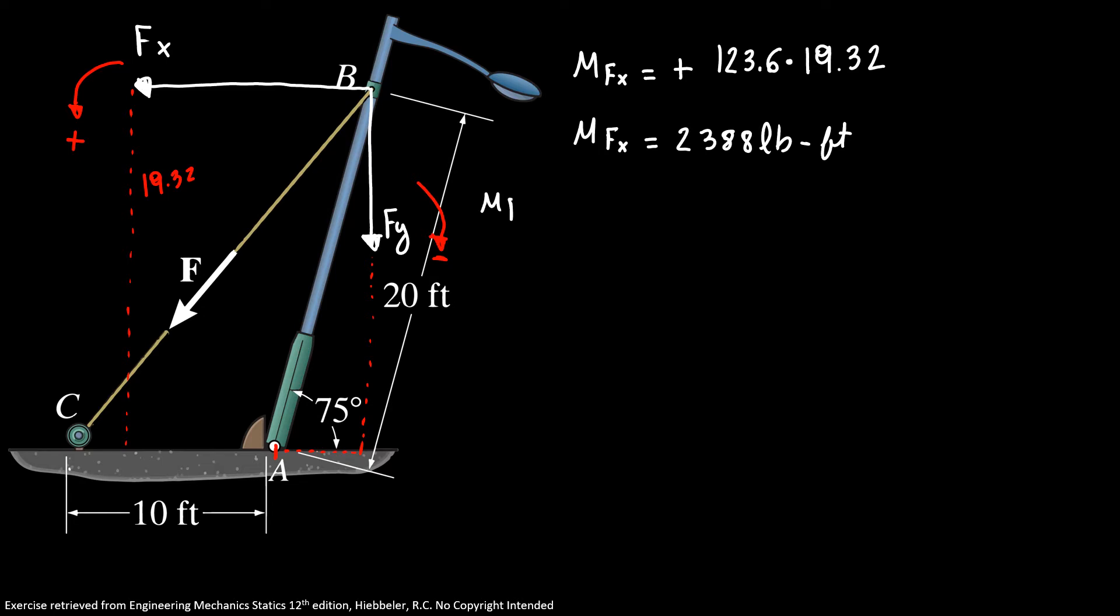Now, our moment produced by Fy is equal minus, because I'm going clockwise, 157.2 times 5.18. So, the moment produced by Fy is equal to 814.3 pounds-feet.